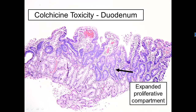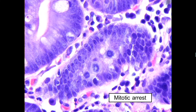This is a beautiful duodenal biopsy from a patient with horrendous diarrhea who was taking colchicine. You'll notice that the crypts are expanded — here are the Brunner glands — so the villi are a little on the short side by default, but it's not very inflamed. At high magnification, we can see the telltale sign: we're in the proliferative compartment and we have mitotic arrest.